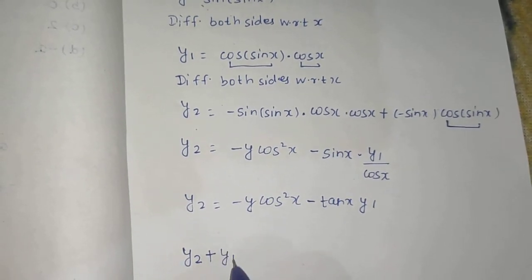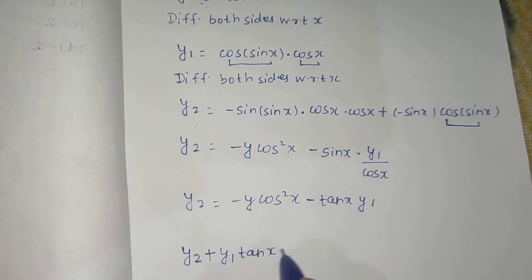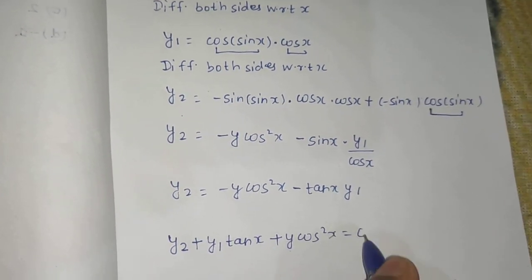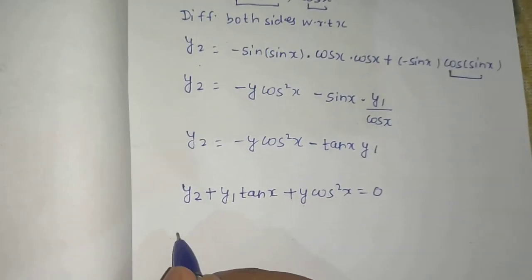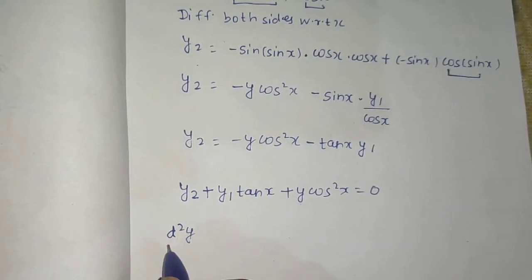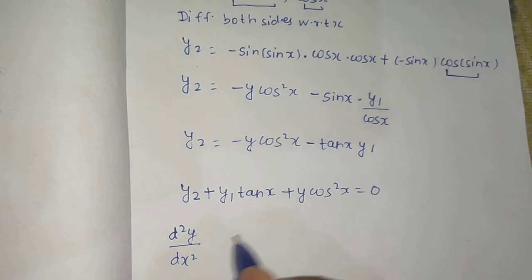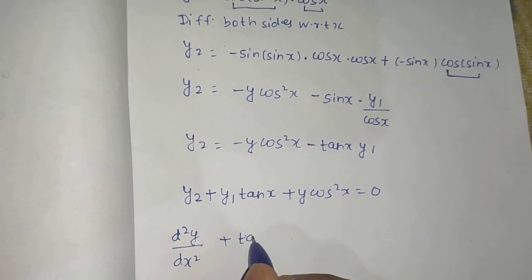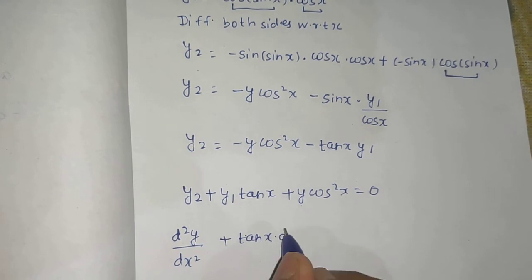Now y2 is basically your second derivative, so d2y over dx square plus tan x times dy by dx plus y cos square x equals to 0. So this is what we needed to prove.